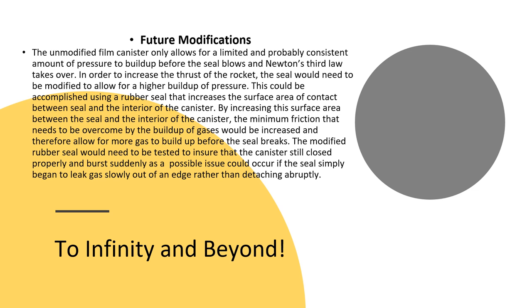By increasing the surface area between the seal and the canister, the minimum friction that needs to be overcome by the buildup of gases would be increased, and therefore allow for more gas to build up before the seal breaks. The modified rubber seal would need to be tested to ensure that the canister still closed properly and burst suddenly, as a possible issue could occur if the seal simply began to leak gas slowly out of an edge rather than detaching abruptly.